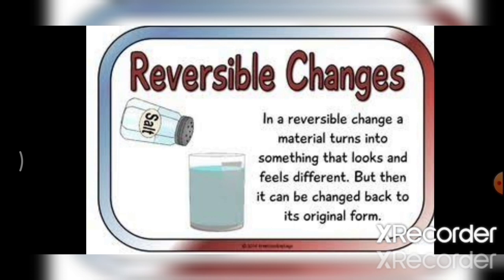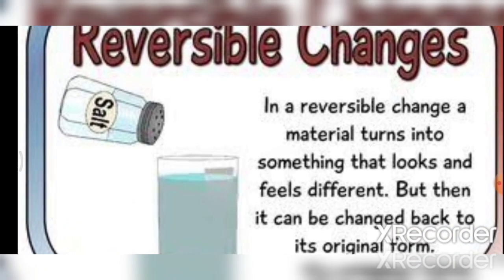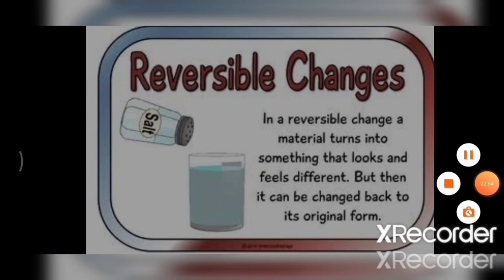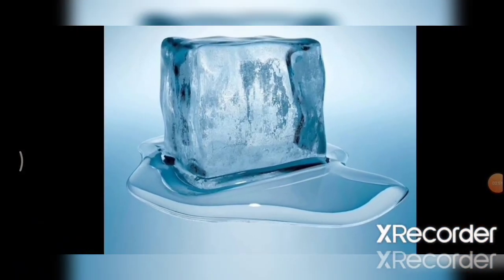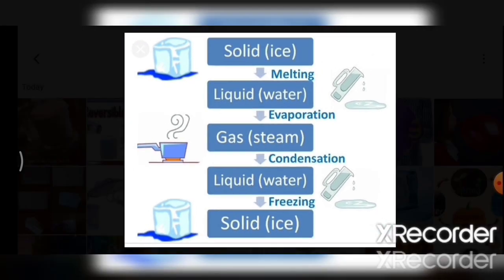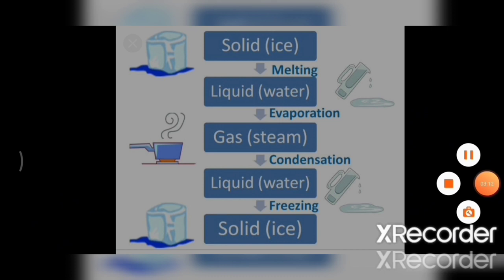A reversible change is a change that can be reversed. These changes are observed in the physical state, size and shape of the substance. A reversible change does not create a new material. Examples: melting of ice into water, boiling, evaporation and condensation are examples of reversible change.